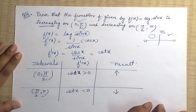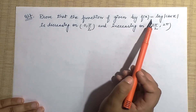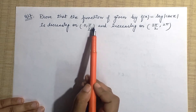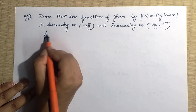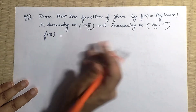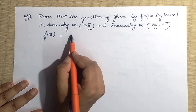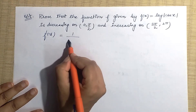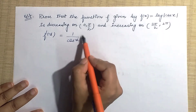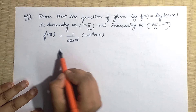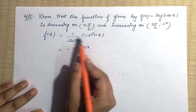Now question number 17 — it will be similar. Prove that f(x) = log(cos x) is decreasing on (0, π/2) but increasing on (3π/2, 2π). Let's find f'(x). Differentiating log(cos x): differentiation of log gives 1 upon cos x, then by chain rule, differentiation of cos x gives minus sin x. So the value is minus sin x over cos x.